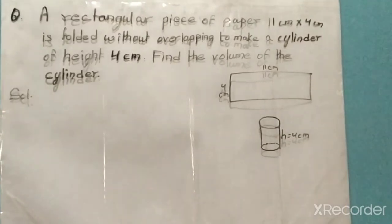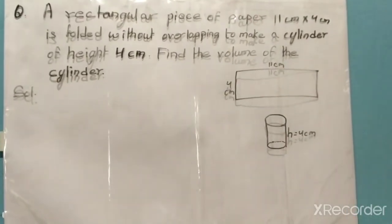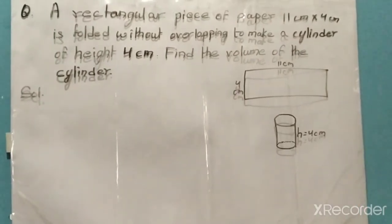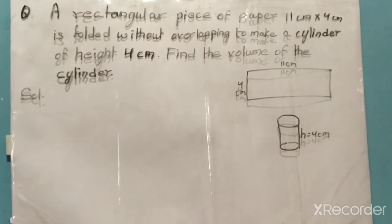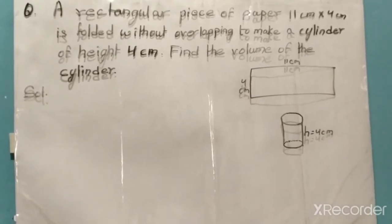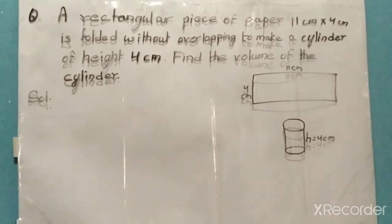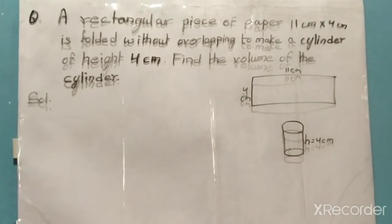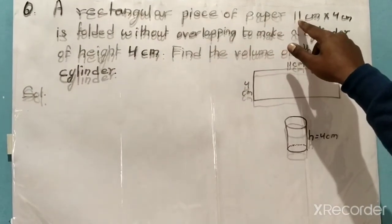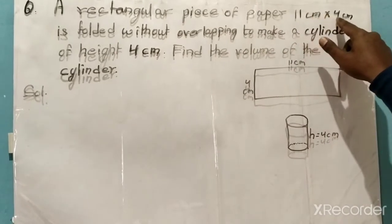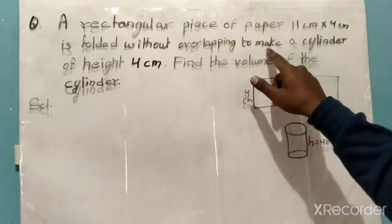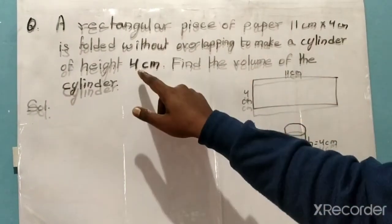Hello friends, welcome to our YouTube channel. In this channel we discuss geometry and mensuration. Today we will discuss a problem related to the volume of a cylinder. Today's question is: a rectangular piece of paper of size 11 centimeter by 4 centimeter is folded without overlapping to make a cylinder of height 4 centimeter.